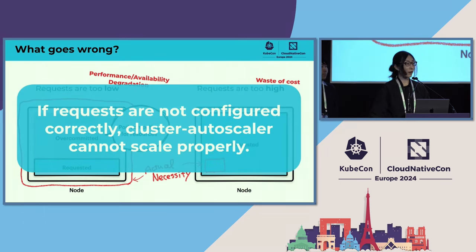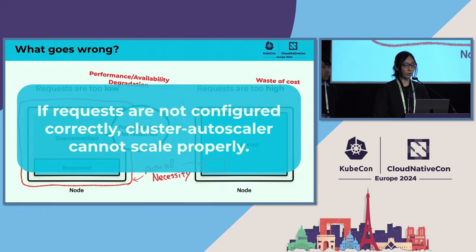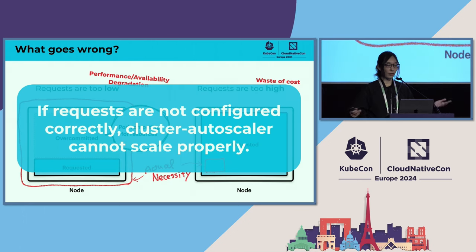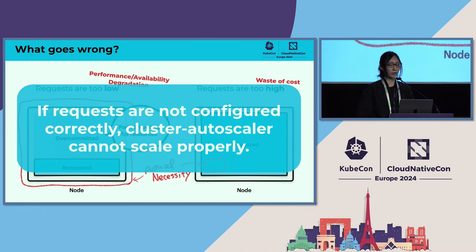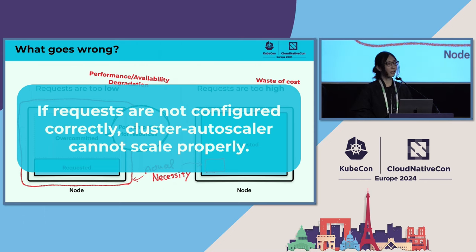Resource settings affect the entire cluster, not just individual pods. Taking cluster autoscaler as an example, it also relies on pod requests to make decisions about scaling up and down. If you do not set the right amount of resources, the entire cluster will not scale properly. Therefore, allocating exactly what resources are actually needed — no more, no less — is important.